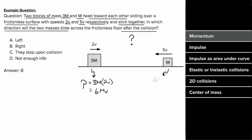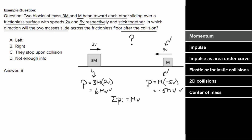And the momentum of the mass m is going to be the mass m times the velocity, which is negative 5v. Momentum is a vector, so you can't forget the negative signs, which gives a momentum of negative 5mv.